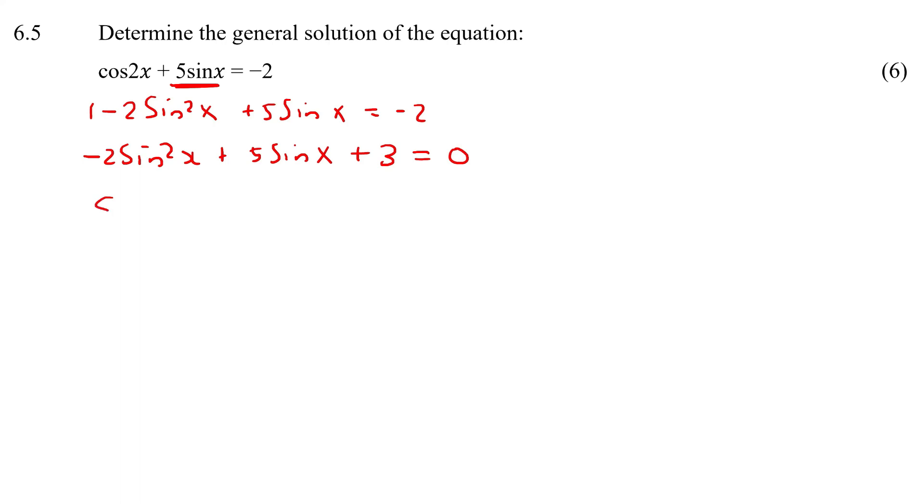Now you can do multiple things here. I'm just going to divide everything by a negative. I don't want to work with a negative. So this is going to become 5 sin x and then minus 3.